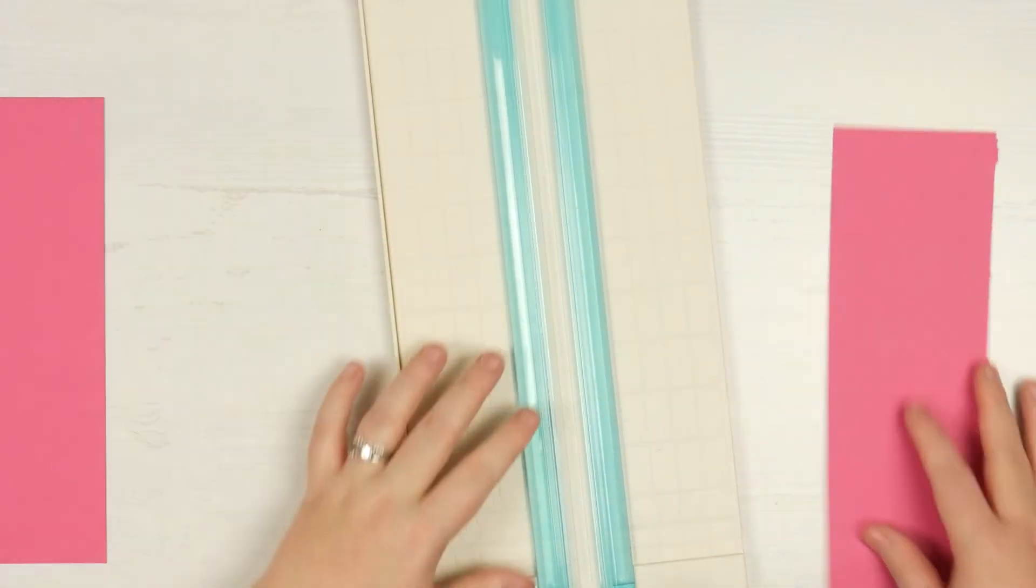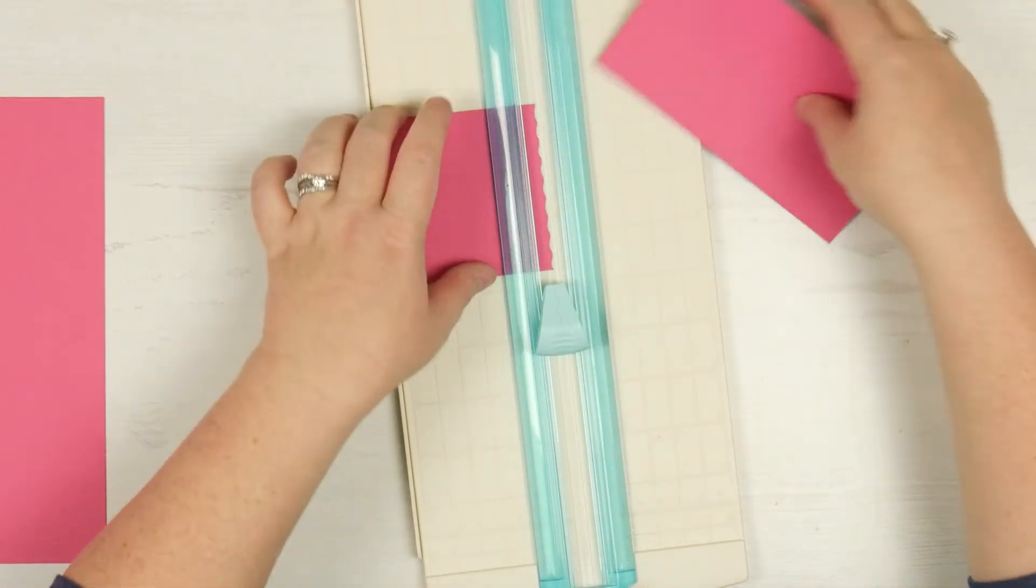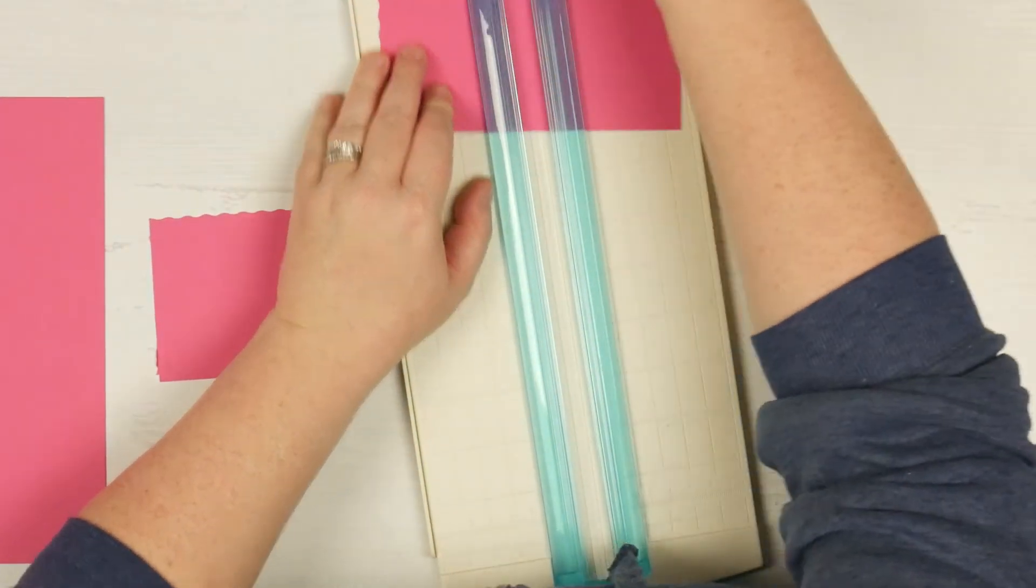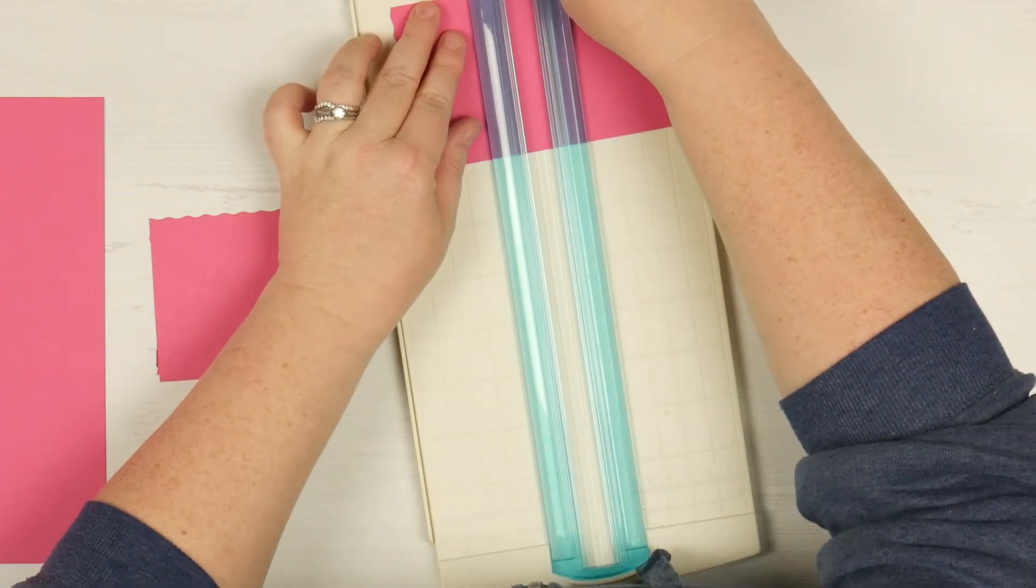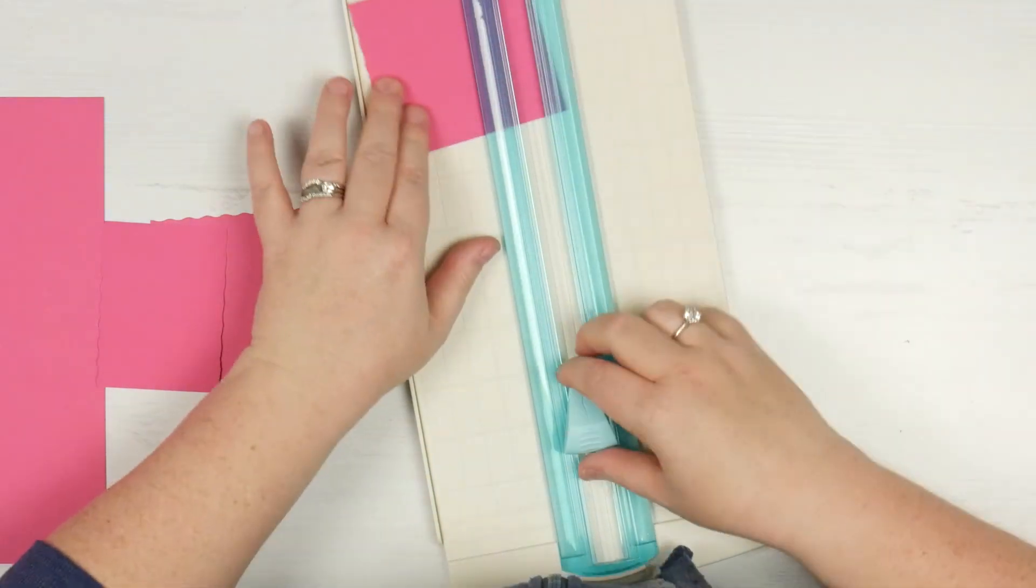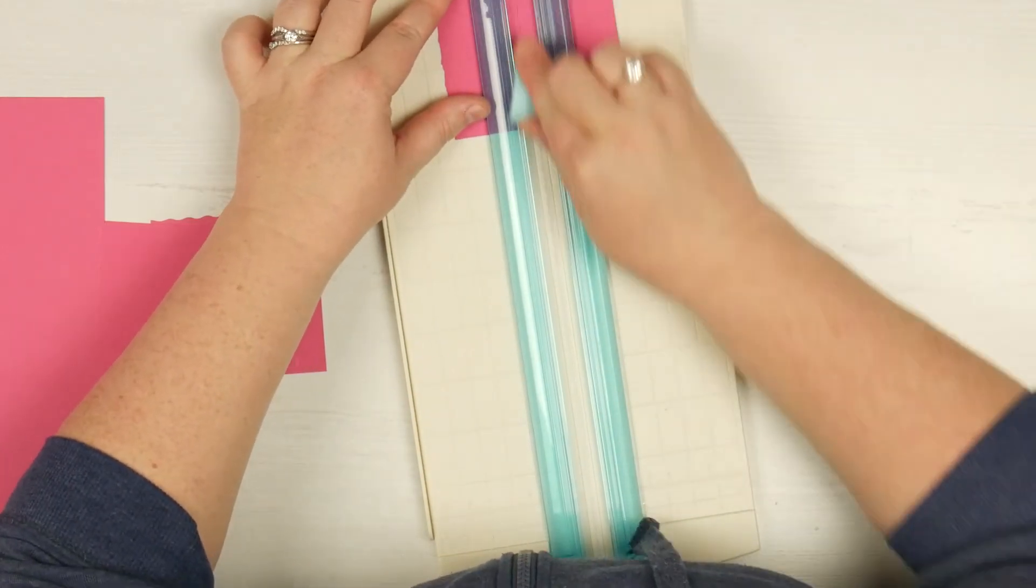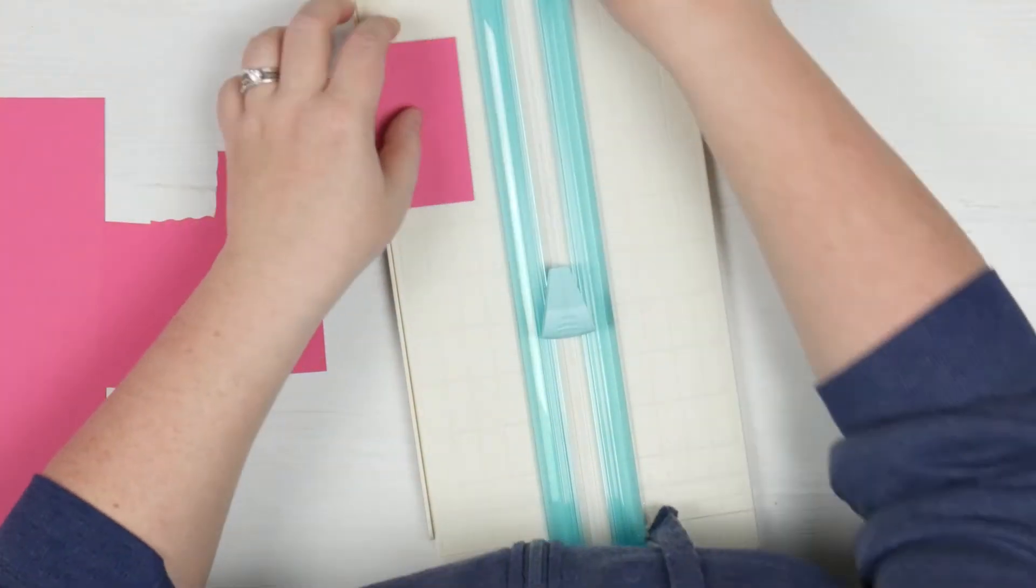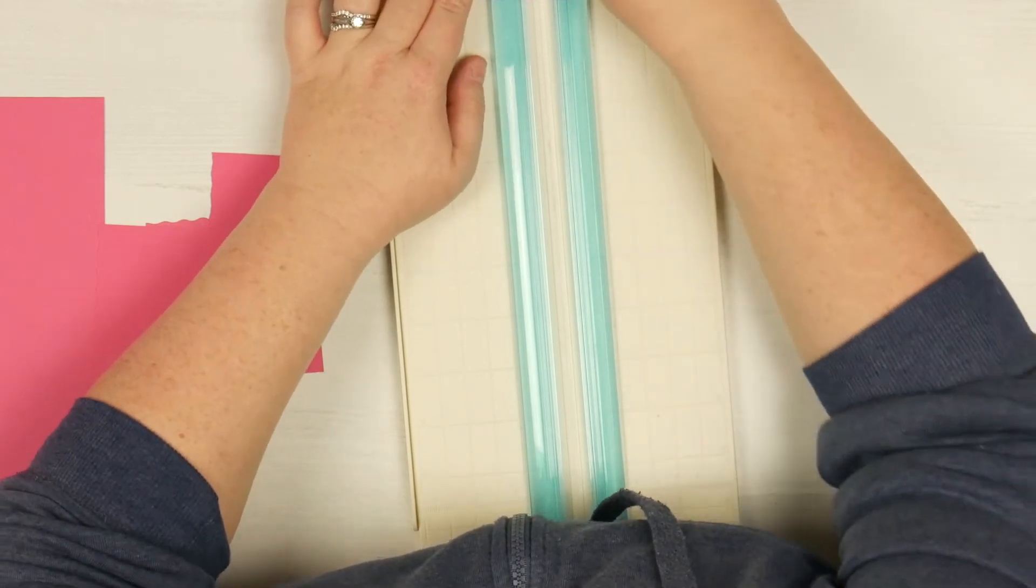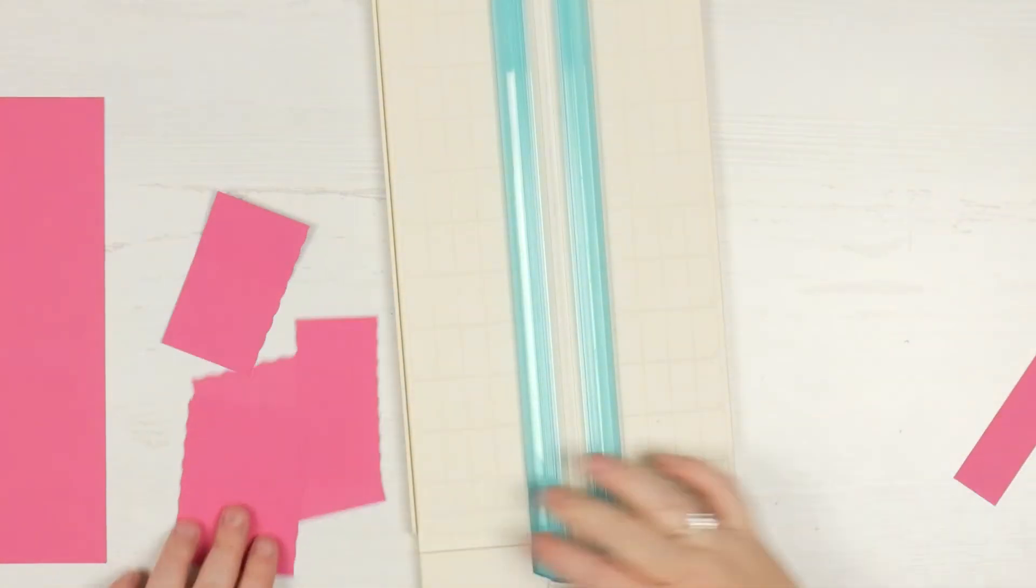But what it does do really well is it gives me edging. So this one has got a couple of different ones. It's got a little scallop, it's got a deckle. I find these ones work better but they're still not great. And then it also has one here to perforate, which I think is kind of cool and I should use more often. So it kind of gives you a way that you can tear this apart.